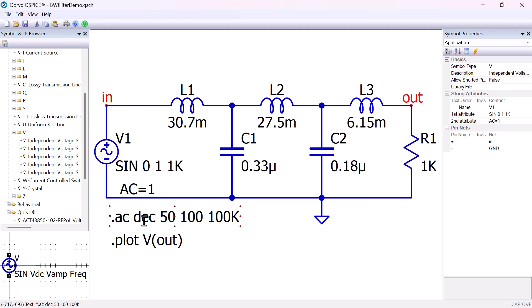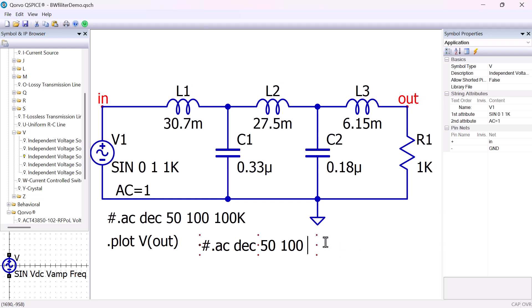Place a pound sign at the beginning of the line to make it into a comment. Using CTRL-C, the copy command, copy the AC statement and with CTRL-V paste it back in the schematic. Double click and change this to TRAN with .TRAN and 20 milliseconds.